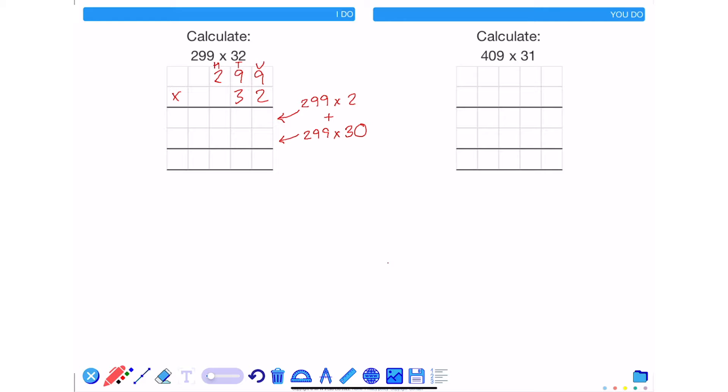So in order to multiply 299 by 2 we're going to times each of the digits in 299 by 2. So beginning with 2 times by 9, this gives me 18. So put the 8 and carry the 1.